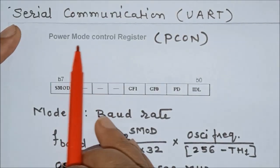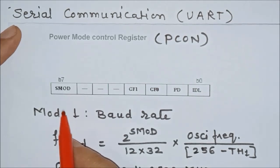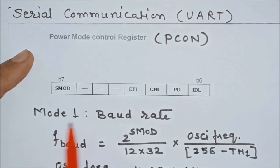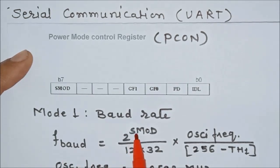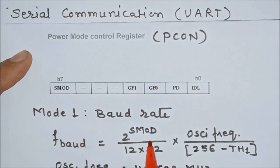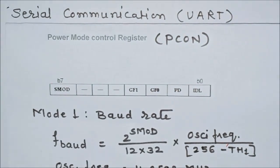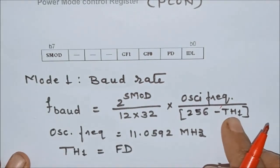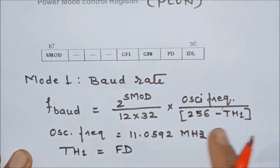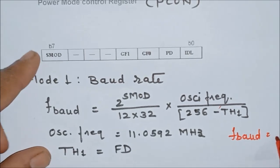The next register is the power mode control register, that is the PCON register, and the SMOD bit of PCON is used to set the baud rate. In mode 1, the baud rate formula is: Fbaud = (2 raised to SMOD) / (32 × 12) × (Fosc / (256 − TH1)). We are using an oscillator frequency of 11.0592 MHz, and we need to find the count to store in TH1 for a baud rate of 9600.